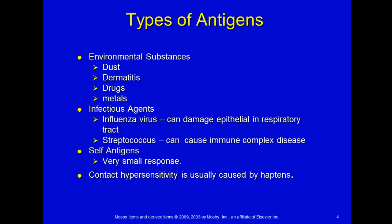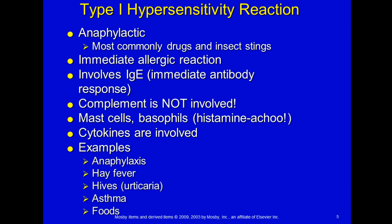Some antigens that bring on these responses include environmental substances such as dust, dermatitis, drugs, and metals. For example, cheap jewelry with nickel can cause a neck rash — that's contact dermatitis. Infectious agents like the influenza virus or strep bacteria can cause immune complexing diseases or respiratory tract damage. Self-antigens can cause a small response; contact hypersensitivity is often caused by haptens, like that nickel in necklaces.